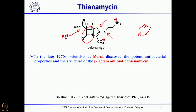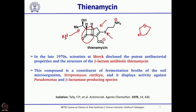As mentioned while discussing penicillin, penicillin created a major effect on the treatment of bacterial infection. After some time, bacteria started developing resistance to penicillins. That is why a second level of antibiotics was required to tackle all types of bacterial infection. In the 1970s, the Merck group disclosed the structure of thienamycin, which showed significant antibacterial activity and was isolated from the fermentation broths of the soil microorganism Streptomyces cattleya. It showed very good activity against Pseudomonas and beta-lactamase-producing species — a second major breakthrough in antibiotic history.